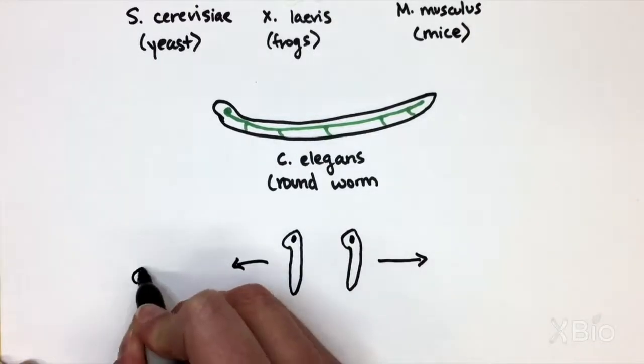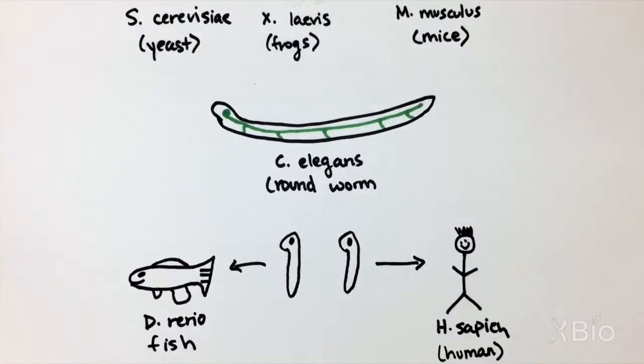Fish are a great model to study early development. In the beginning, fish look very similar to people.